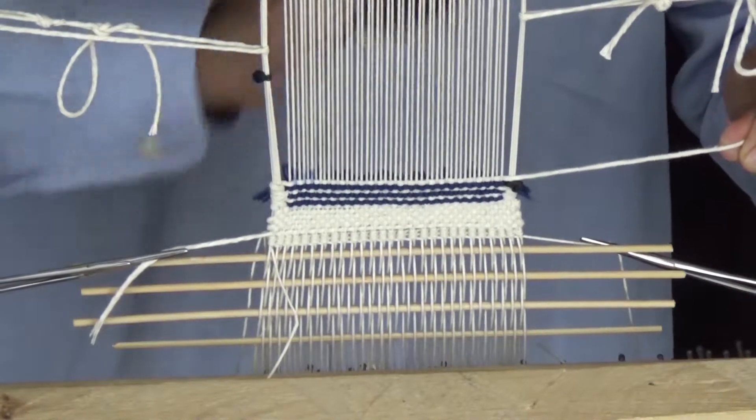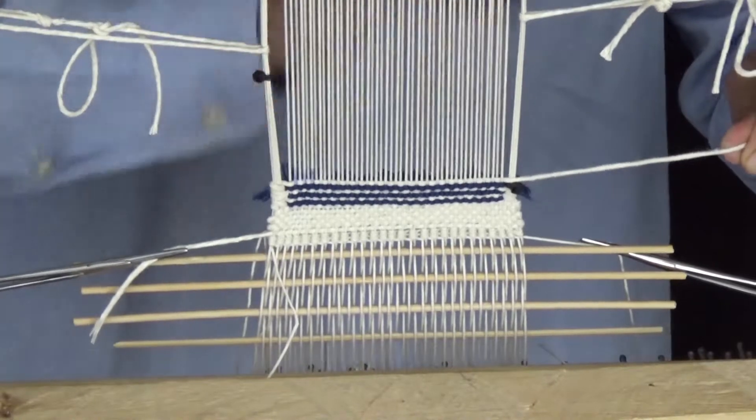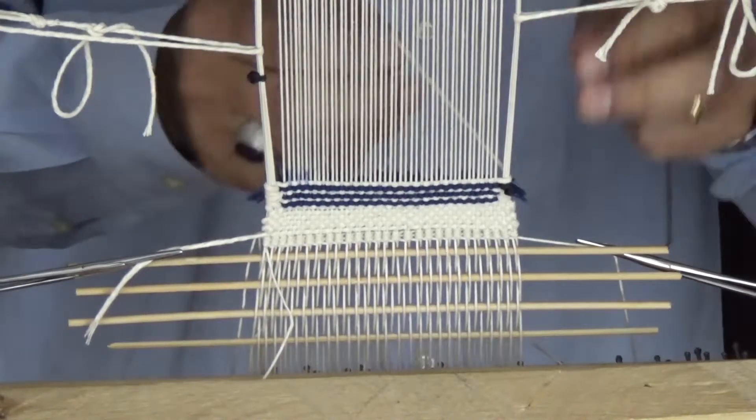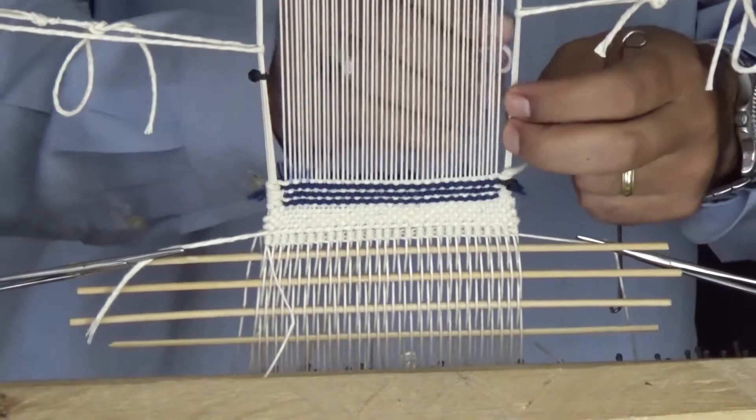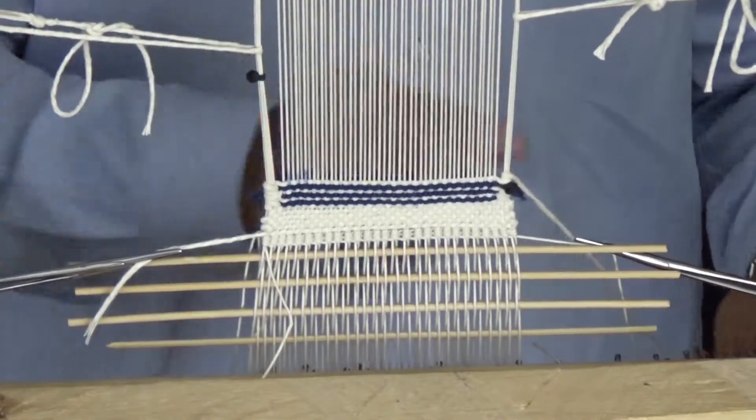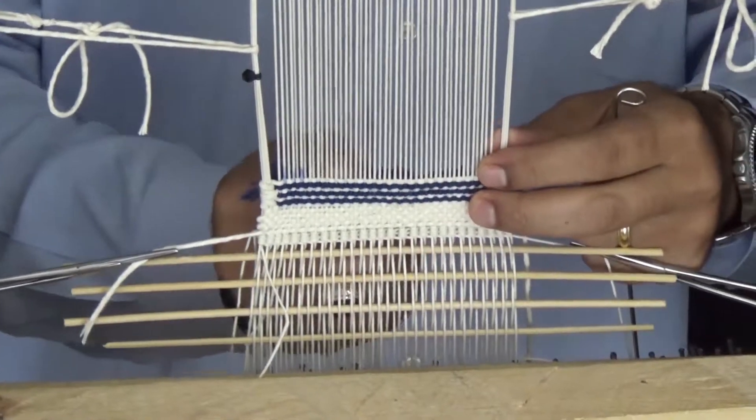Pay attention to a weave pattern developing on the back of the rug as we continue to add rows of knots. Experts will always examine the back of the rug as the weave pattern will provide clues on where the rug was woven originally.